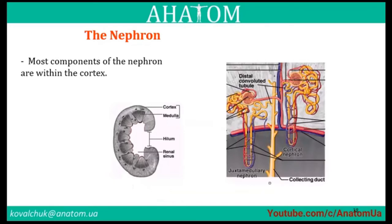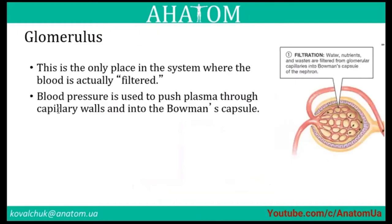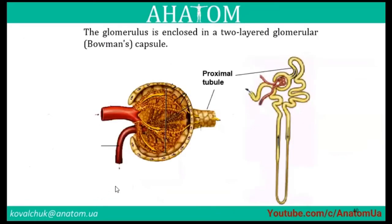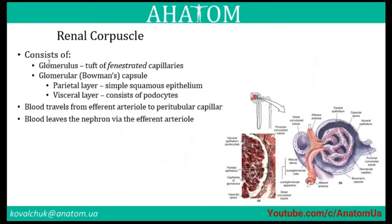Most components of the nephron are within the cortex. The glomerulus is the only place in the system where blood is actually filtrated. Blood pressure pushes plasma through the capillary walls and into Bowman's capsule. The renal corpuscle consists of the glomerulus and the glomerular capsule, also called Bowman's capsule.